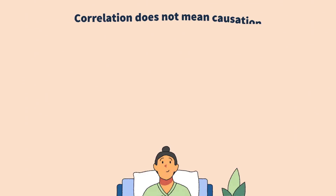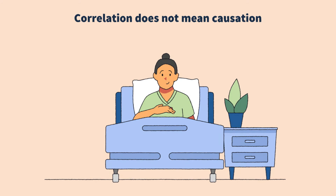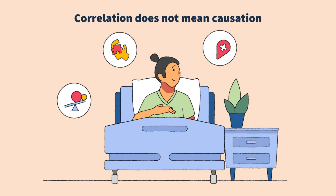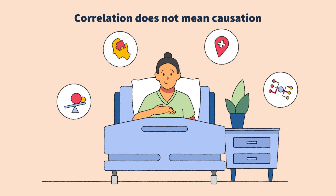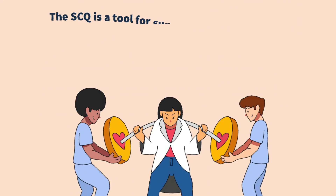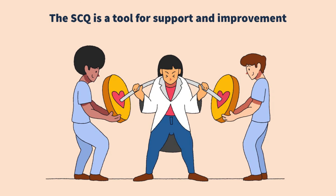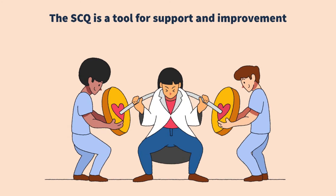Three, correlation doesn't mean causation. Low scores don't necessarily mean poor compassion. There may be other factors at work like staff-to-patient ratios, patient characteristics, care locations, or differing levels of organizational support. Four, it's a tool for support and improvement. The SEQ is a tool for improving patient care and supporting care teams in doing so. Everyone has different baselines for compassion, and healthcare providers have different ways of expressing it. Compassion is a team sport.